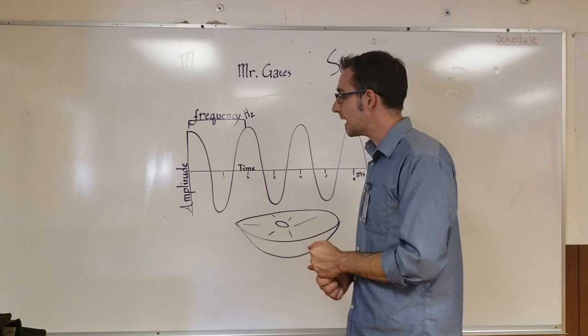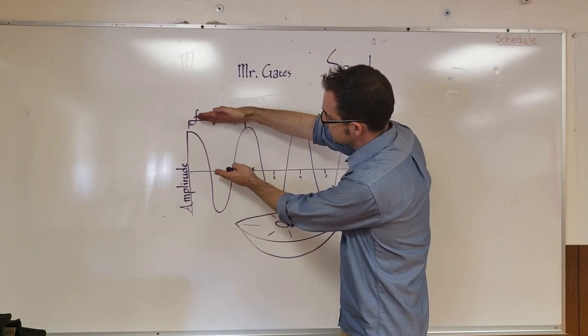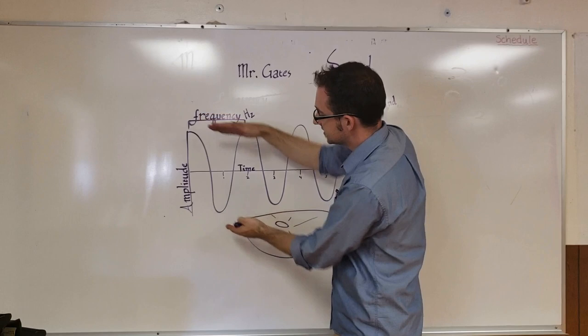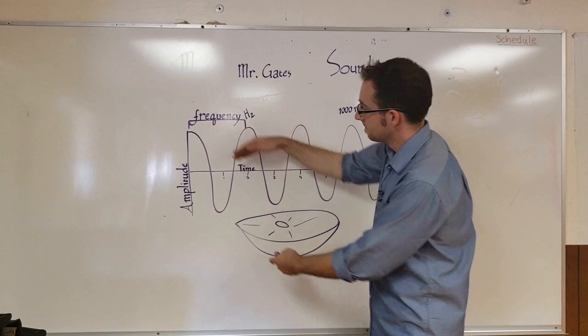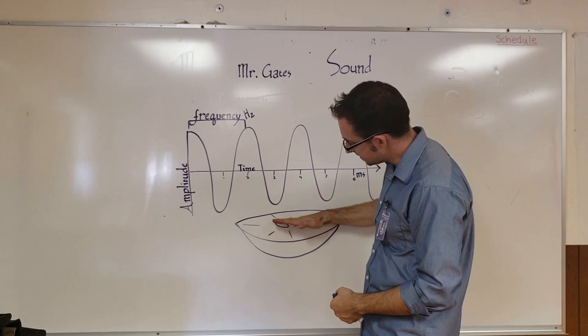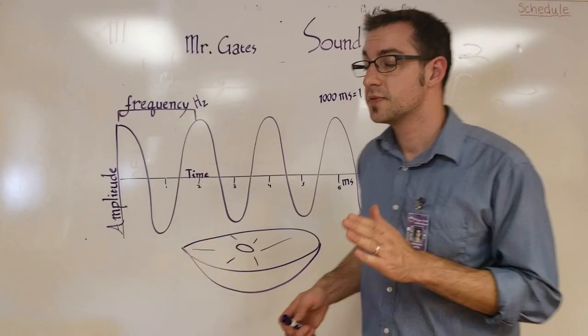Amplitude is how loud or soft you're hearing something and that's represented by the mountains and the valleys, the peaks and the valleys of your waveform. The higher the peaks and lower the valleys, the more your diaphragm of your speaker is moving up and down, the louder it's going to sound. If they're closer together, if they're little peaks and little valleys, that means your diaphragm is not moving as much and softer.